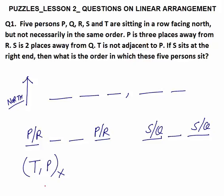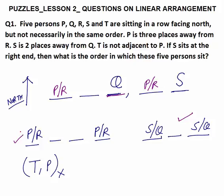As S sits at the right end, Q would be at the third position from the right because S and Q have a gap of one. That statement is now filled. Now T and P are not together, and there is a gap of two persons between P and R. The only position left for P and R is the first and fourth places — P and R with a gap of two.